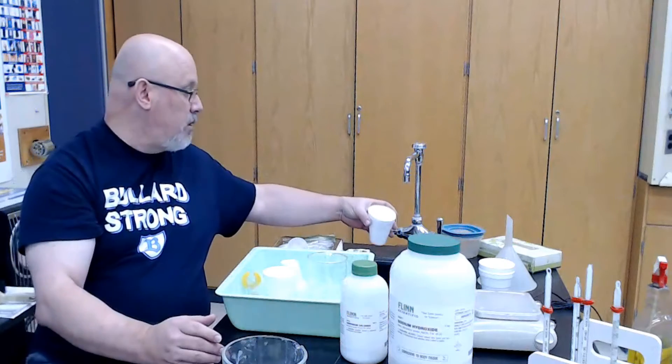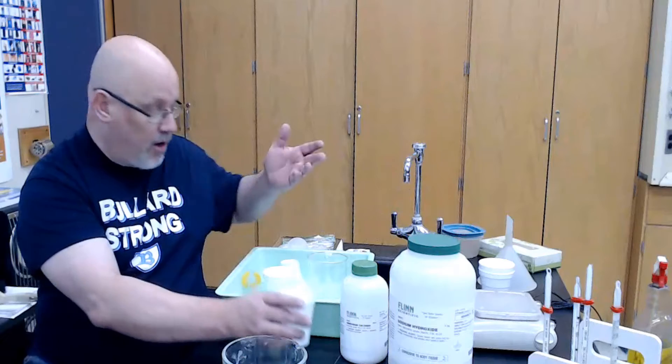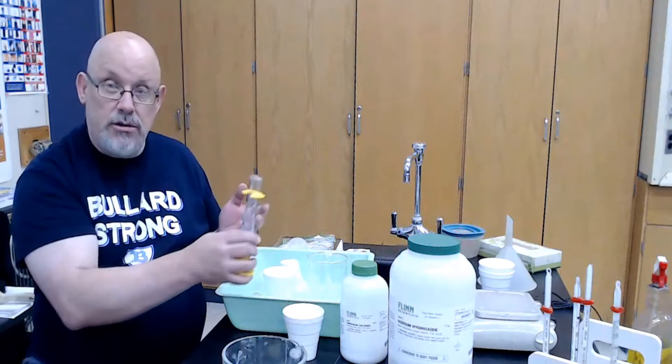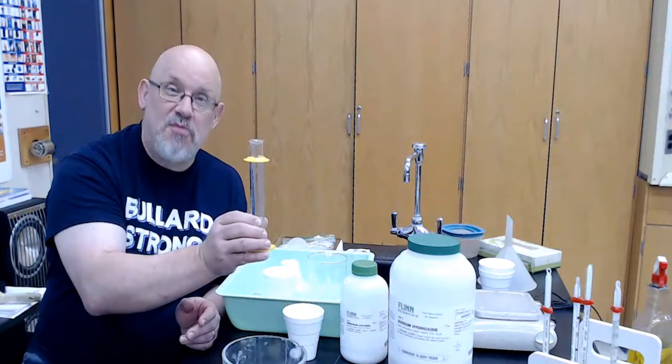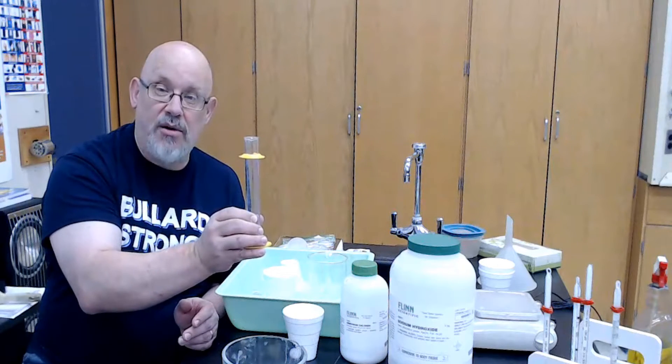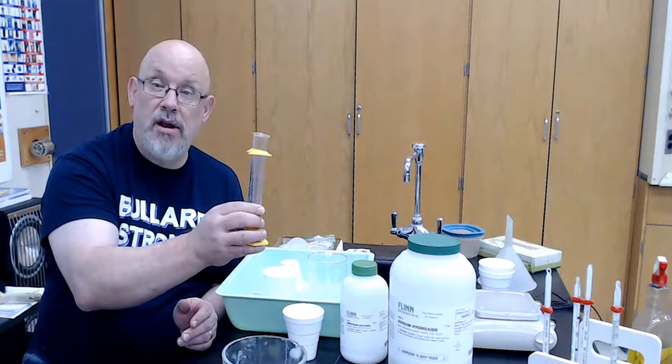We would rinse off the thermometer, we would dump out the contents of that and we would fill it up again. Now to accurately measure the amount of water we measure in the first place, we use a graduated cylinder, which is just a tube that has markings on it to tell us how to read it accurately.